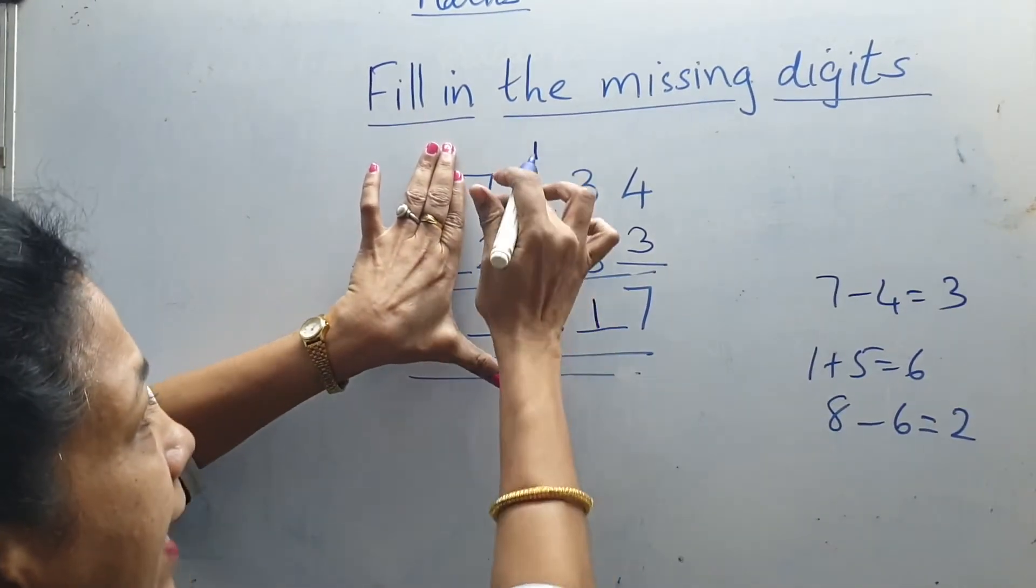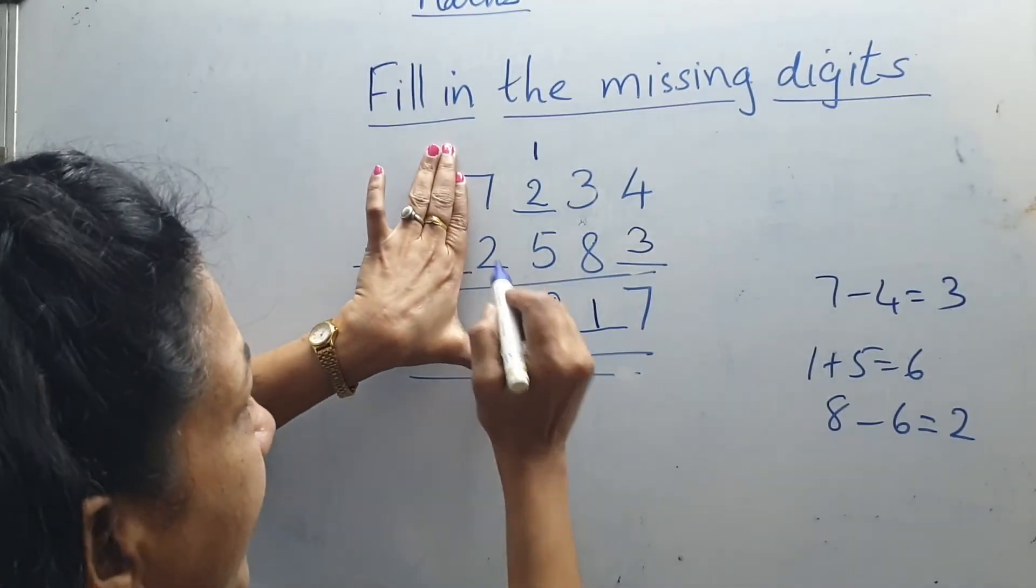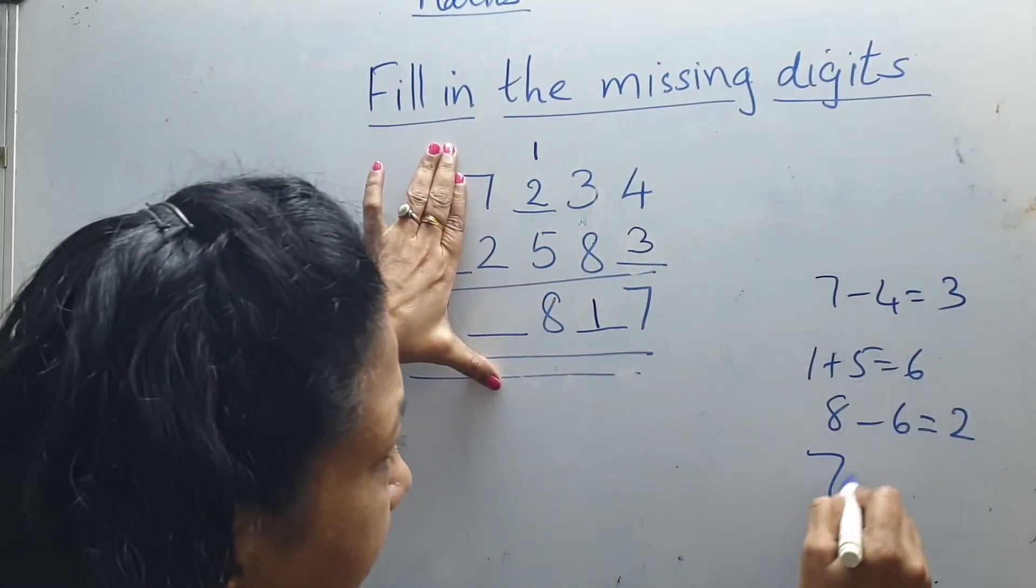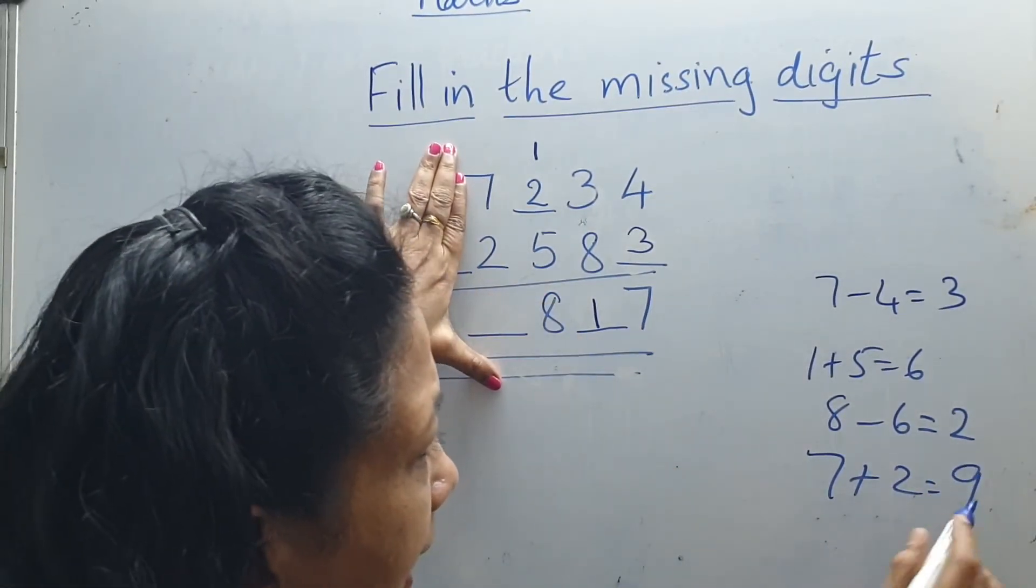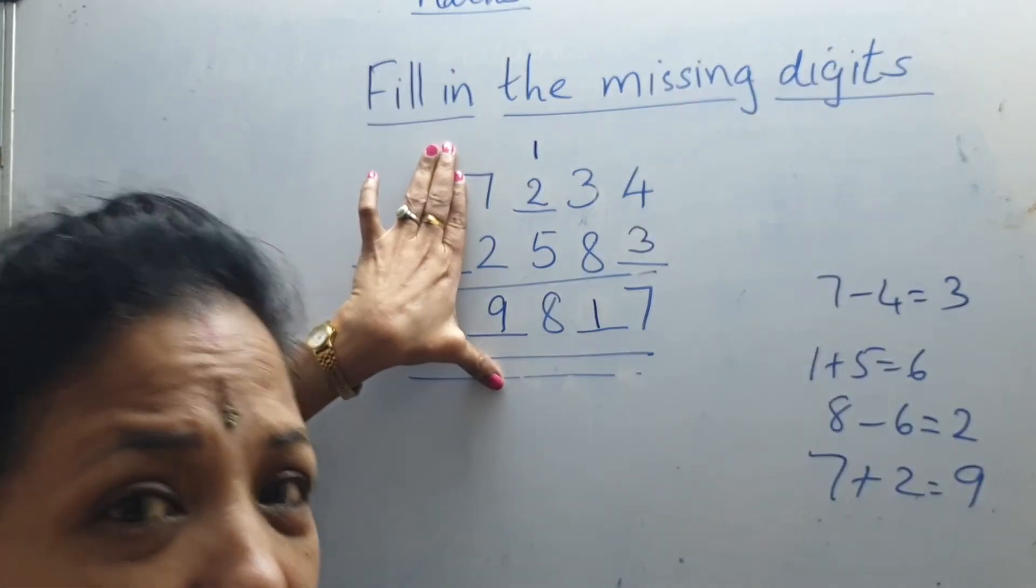Now next column. 7 plus 2. What is 7 plus 2? 7 plus 2 is 9. 7 plus 2 is 9. So this number will come here. 7 plus 2 is 9.